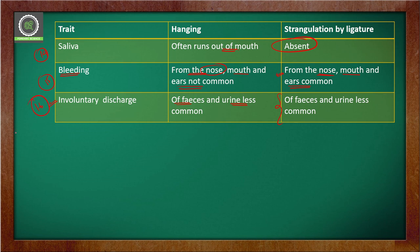On the basis of these 16 points, we have differentiated hanging and strangulation by ligature. I hope this lecture is helpful to you. If it is, please like this video and share it with your friends.